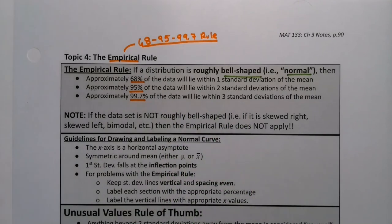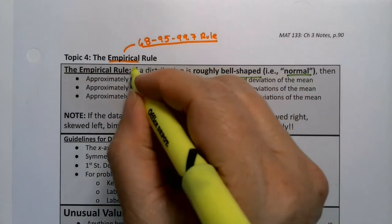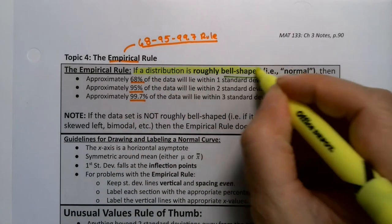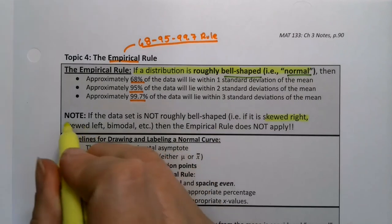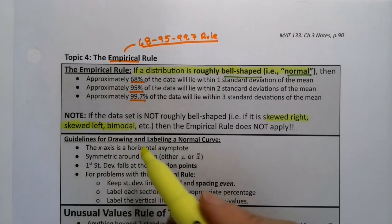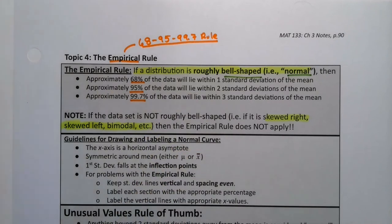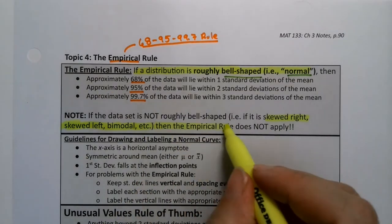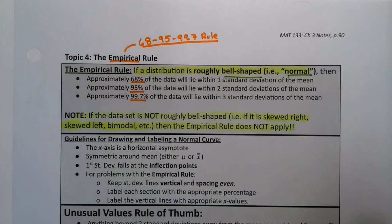Now a couple things. One, it has to be this shape. If it's not this shape, if it's skewed left or skewed right or if it's bimodal, meaning it would have two peaks like a camel's back, then the empirical rule does not apply.